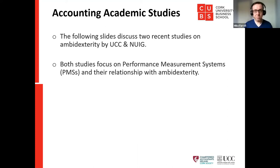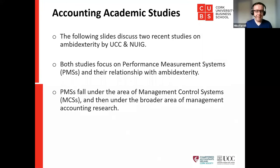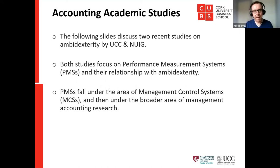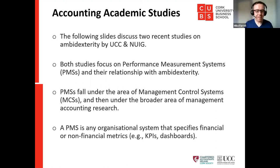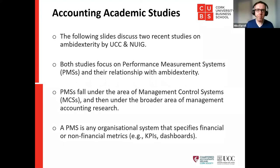Moving on to the accounting academic studies — the following slides discuss two recent studies on ambidexterity from UCC and NUI Galway, both focusing on performance measurement systems and their relationship with ambidexterity. In the academic space we call performance measurement systems 'management control systems,' under the broader area of management accounting research. A PMS is any organisational system that specifies financial or non-financial metrics — whether you call them KPIs, dashboards, or reporting metrics.